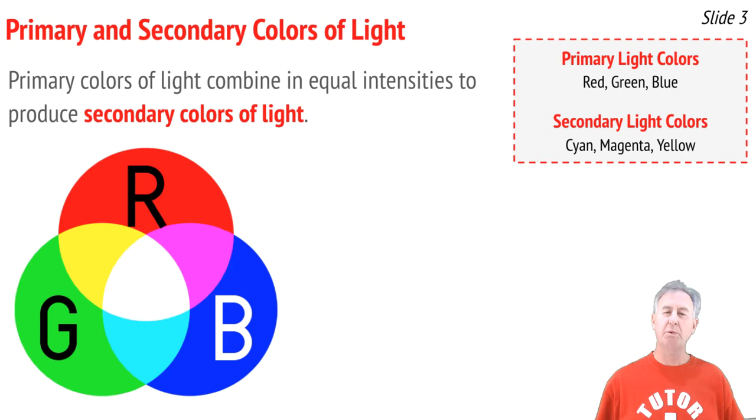How does the interaction between light and the object that it shines upon affect the color appearance of the object?